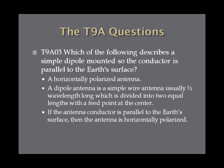Which of the following describes a simple dipole mounted so the conductor is parallel to the earth's surface? The answer is a horizontally polarized antenna. A dipole antenna is a simple wire antenna that is usually about a half wavelength long, divided into two equal lengths connected by a feed point at the center, so your coax feeds it at the center.